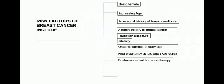Women who take hormone therapy medication that combines estrogen and progesterone to treat the signs and symptoms of menopause have an increased risk of breast cancer. The risk of breast cancer decreases when women stop taking these medications.